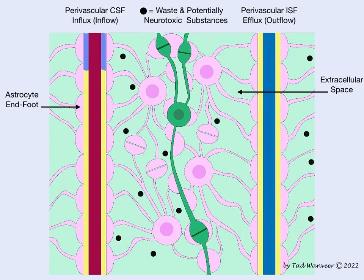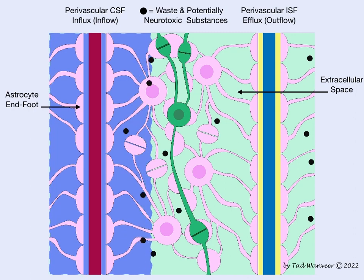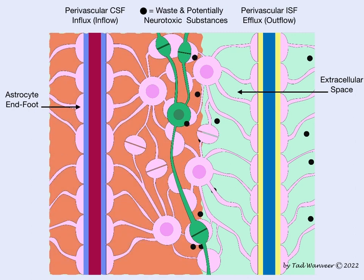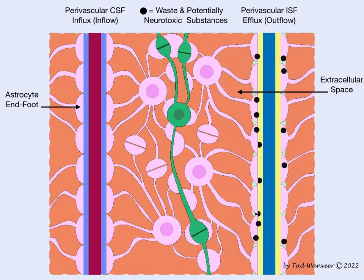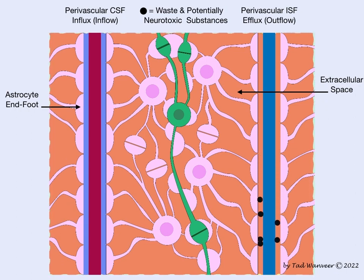In summary, CSF flows inward through or in between the end feet and blends with interstitial fluid. Interstitial fluid flow then helps to carry waste or potentially harmful substances to the outflow portion, then flowing by way of the outflow through various routes back to systemic circulation.